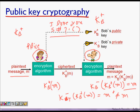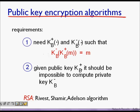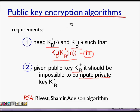These are the properties of public key encryption. First, we need a public key kb+ and a private key kb− such that you can encrypt with the public key but only the authentic receiver can decrypt the message to get m. Second, given the public key kb+, it should be computationally impossible to compute the private key — otherwise anyone with the public key could decrypt the message.